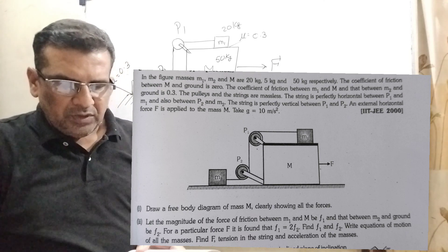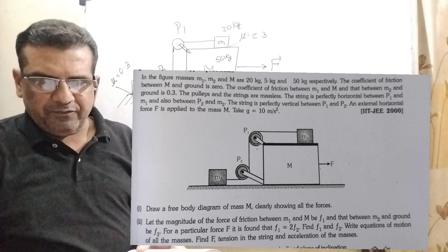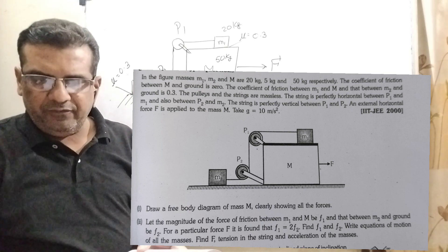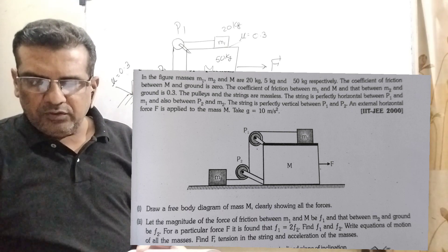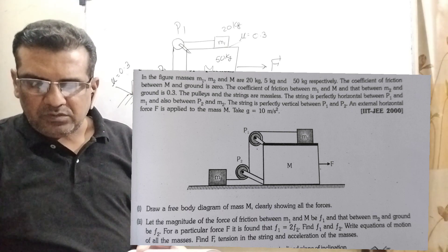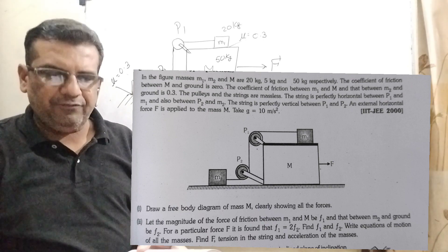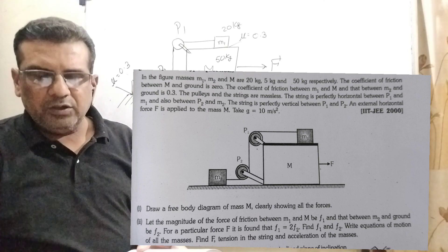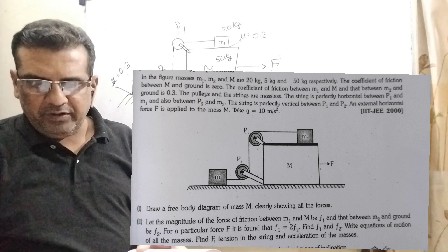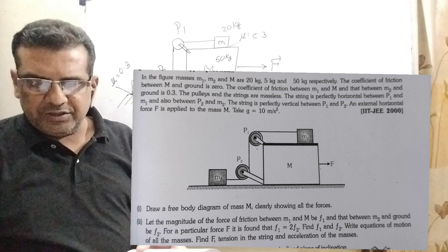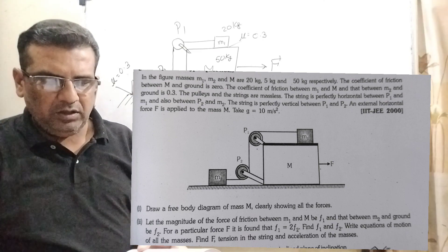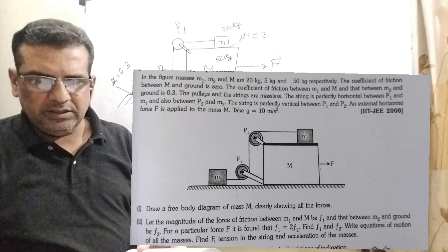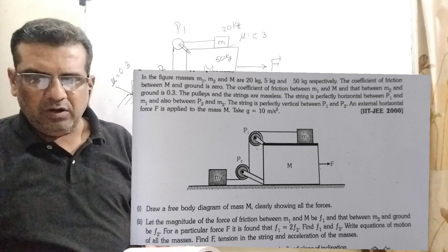And part 2, let the magnitude of force or friction between M1 and capital M be F1 and the force between M2 and the ground be F2. For a particular force capital F is found that F1 equal to twice F2. Write equations of motion of all the masses, find F, tension in the string and acceleration of the masses.